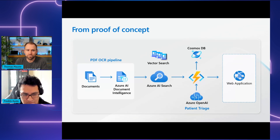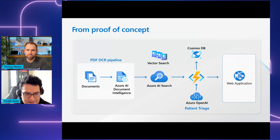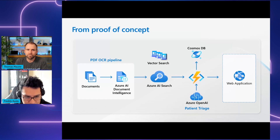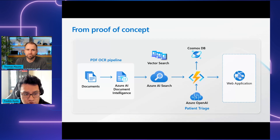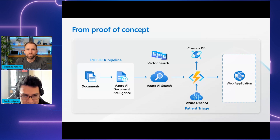This data is then converted into searchable formats — embeddings and vectors — using OpenAI and AI Search, making it easy to look up and cross-reference patient information from different systems. When it's time for patient triage, OpenAI steps in with advanced language models, analyzes the patient data to help prioritize who needs immediate care, ensuring critical cases get attention first. This dramatically improves emergency room efficiency and patient care.